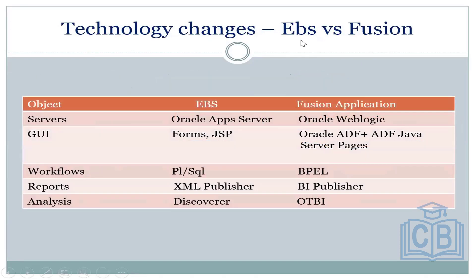Technology changes: EBS versus Fusion. In EBS we have Oracle App Server; in Fusion we have Oracle WebLogic. For GUI, EBS has Forms and JSP pages; Fusion applications have Oracle ADF and Java Server Pages. For workflows, EBS has PL/SQL and Fusion has BPE — Business Process Enterprise. We also have XML Publisher in EBS and BI Publisher in Fusion.